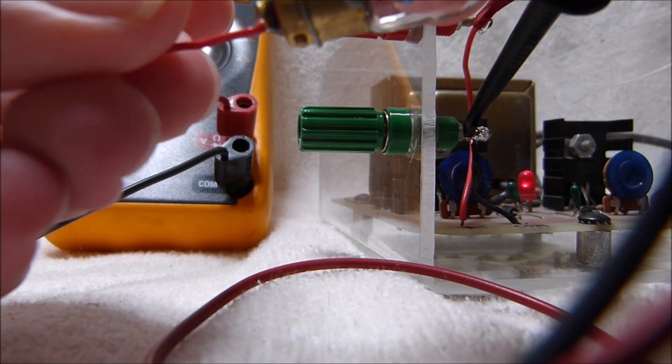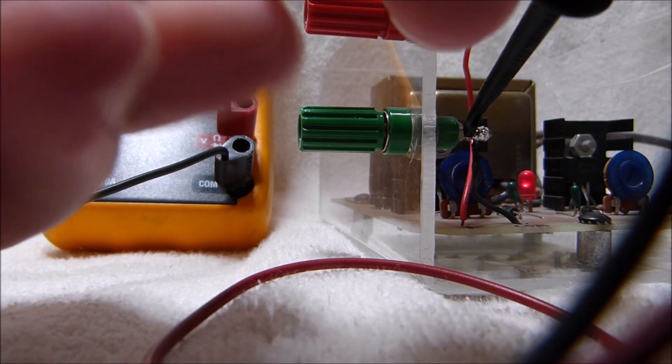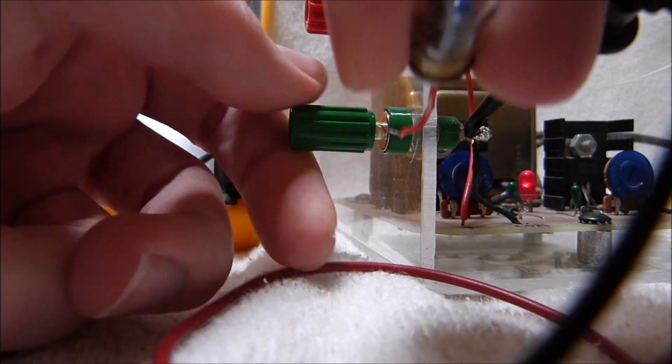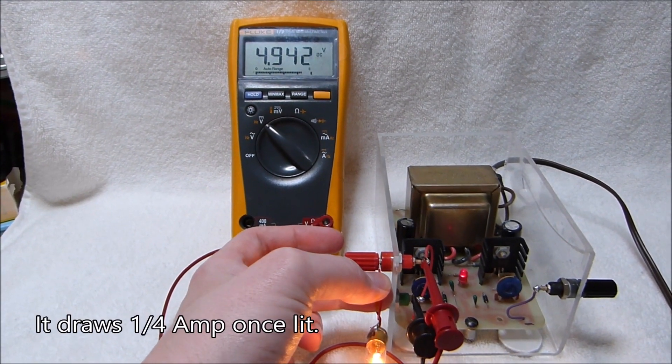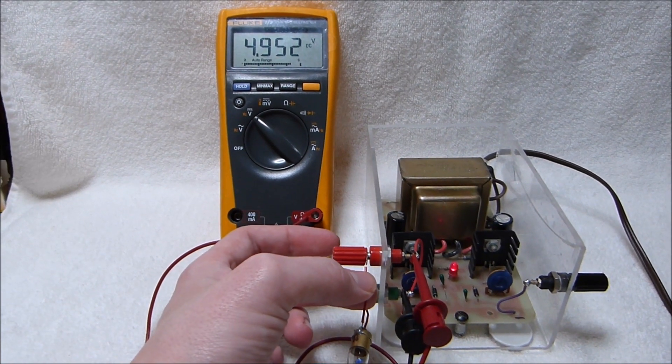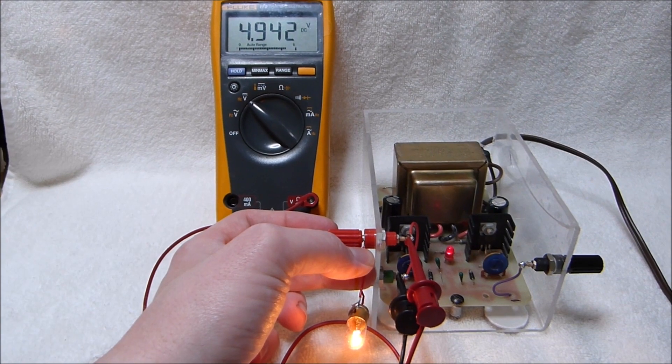That's close enough. This is a TS-44 lamp that I attached wires to. It's a 6.3 volt lamp. You can see it holds pretty steady with the load on or off. It's only dropping about a tenth of a volt. That's not bad.